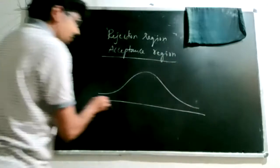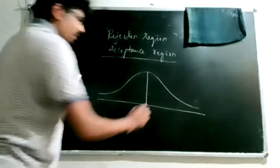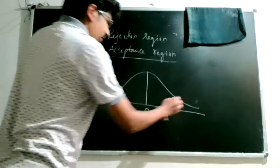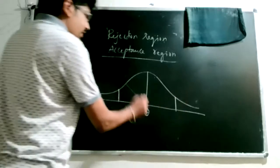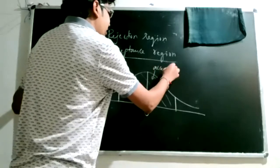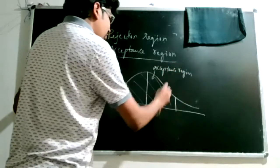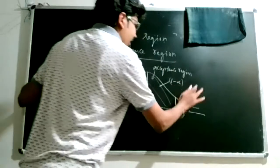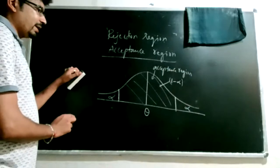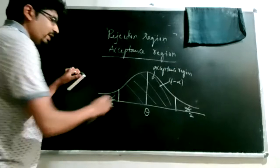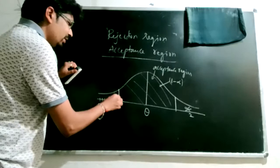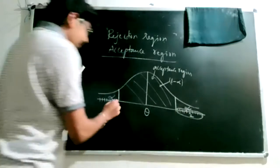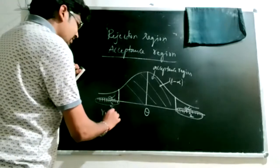We divide the entire normal curve into two parts. The first is the acceptance region, whose area equals 1 minus alpha. The second is the rejection region with area alpha. In the case of a two-tailed test, you split alpha into alpha by 2 on each side. The parameter theta (which could be mu, proportion, or variance) defines these regions. All sample statistics — sample mean, sample variance, sample proportion — that fall in the rejection region lead us to reject the null hypothesis.